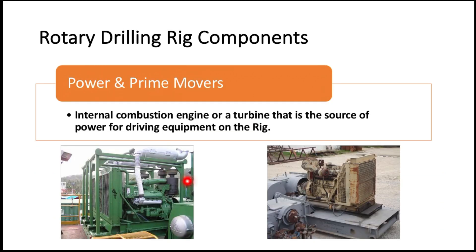The first system is the Power System. The rig must have a method of generating electrical power to operate all the systems. The electrical power generators are driven by diesel-powered internal combustion engines, or prime movers. The rig may have, depending on its size and capacity, up to 4 prime movers driving more than 3000 horsepower. Horsepower is an old but still widely used unit of power in the drilling industry.